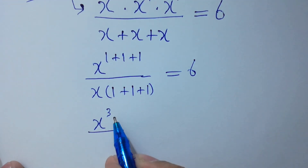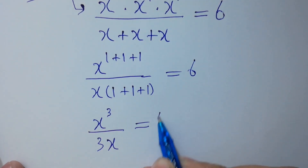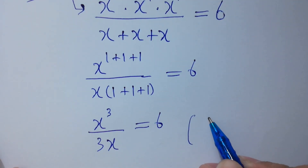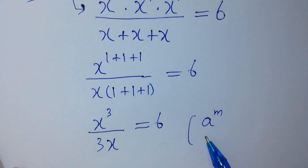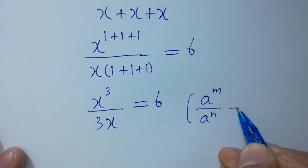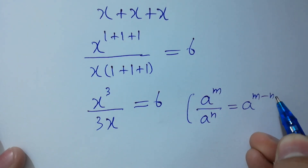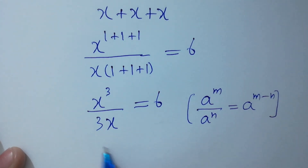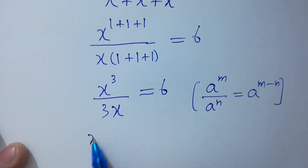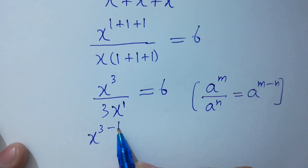We have x to the power 3 over 3x equal to 6. Since a to the power m over a to the power n equals a to the power m minus n, it will be equal to x to the power 3 minus 1.